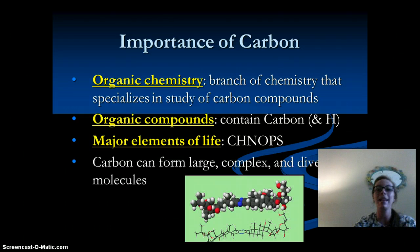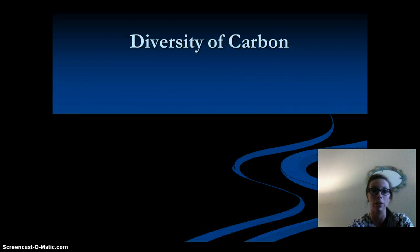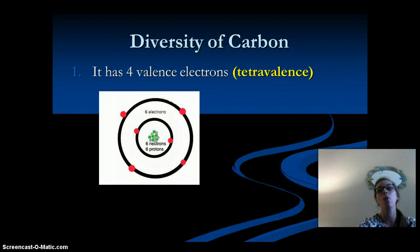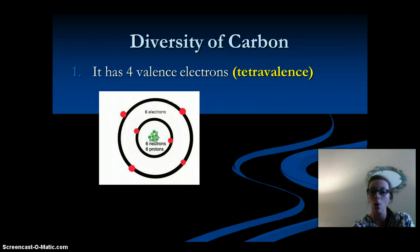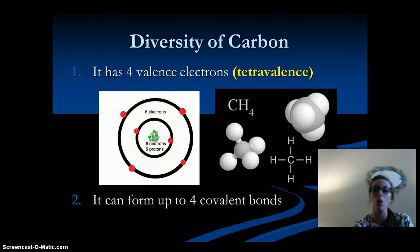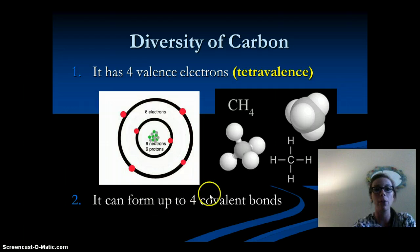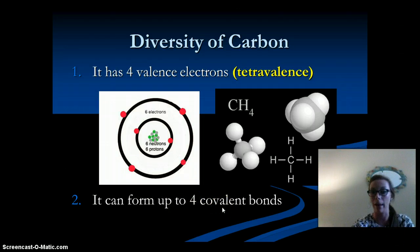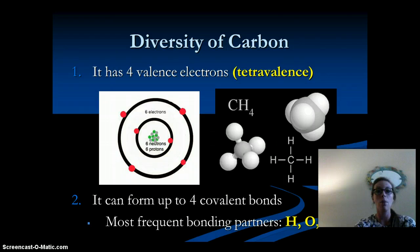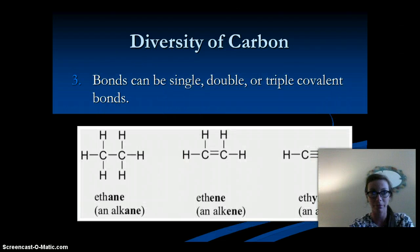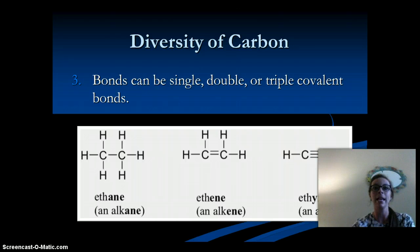Carbon can form many large, complex, and diverse molecules, and these molecules can be known as macromolecules. It has four valence electrons, or tetravalence, which allows it to form up to four covalent bonds with other atoms. Covalent bonds mean that they are going to share electrons. The most frequent bonding partners are hydrogen, oxygen, and nitrogen. The bonds can either be single, double, or triple covalent bonds, and as the number of bonds increases, the strength of that bond increases as well.